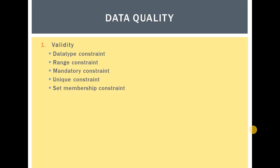The first thing to look into is the validity of data. In order for data to be valid it needs to fulfill the data type constraint — that is, if the data is going to represent the number of items, the data type should be in integers. The range constraint also affects validity, where a possible range of age for a particular activity is from 18 to 60, and if a value is outside of this range then that is going to violate the range constraint and would affect the validity of data.